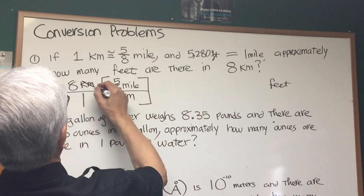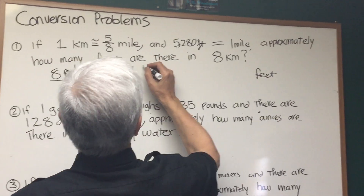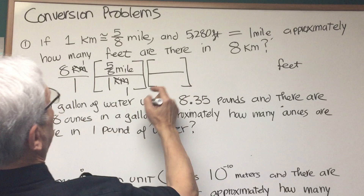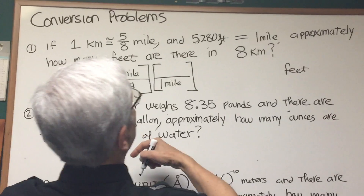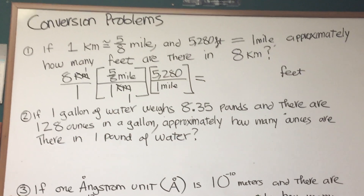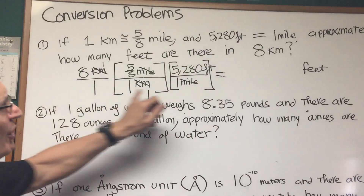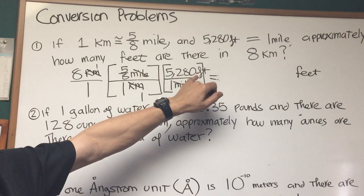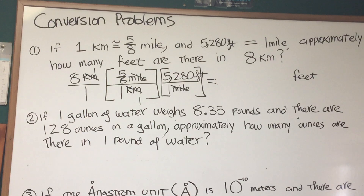Using dimensional analysis, we cancel out the kilometers — we've now expressed this number in miles. We want to go from miles to feet, so our conversion factor has one mile in the denominator to cancel the mile in the numerator from the previous fraction, and one mile is equal to 5,280 feet. Now let's check our dimensional analysis: kilometers cancel out, miles cancel out — we're working in units of feet. We've used the correct conversion factors and our answer will be expressed in feet.